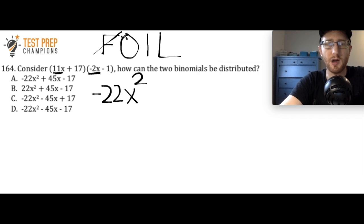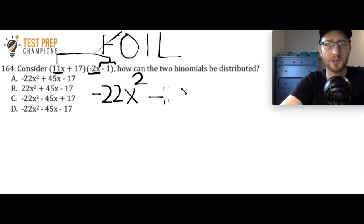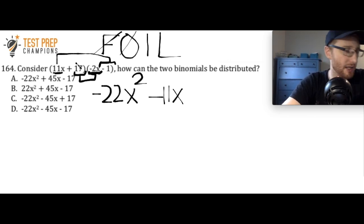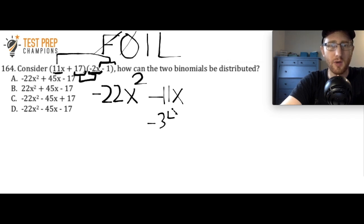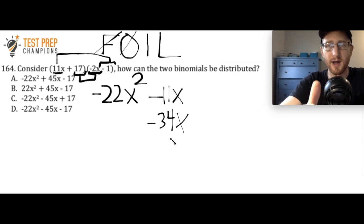For the Outer step, take 11x and multiply it by negative 1, giving minus 11x. For the Inner step, multiply 17 by negative 2x, giving negative 34x. I'll write that below the minus 11x since I'll need to combine those like terms at the end.